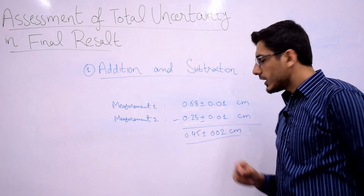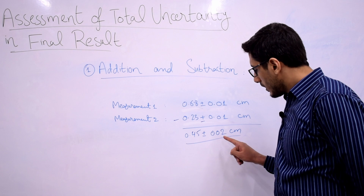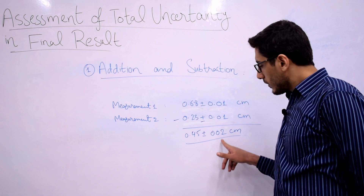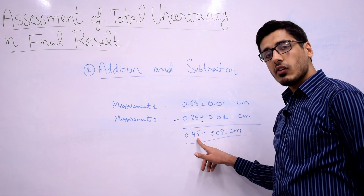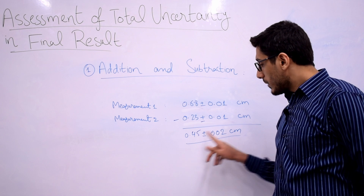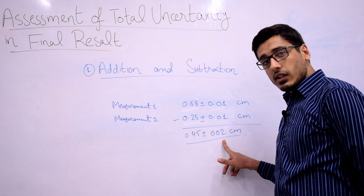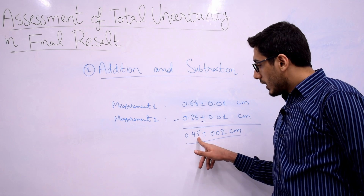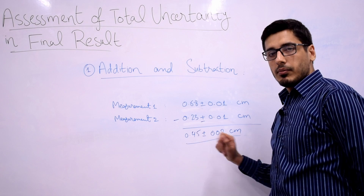One important thing to note here is that the number of decimal places in the uncertainty must equal the number of decimal places in the measurement. The number of decimal places in your total uncertainty cannot exceed the number of decimal places in your measurement.